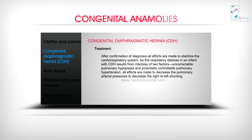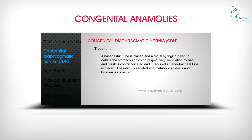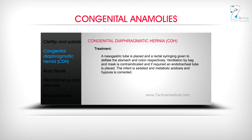Treatment: After confirmation of diagnosis, all efforts are made to stabilize the cardiorespiratory system. Respiratory distress in an infant with CDH results from the interplay of two factors: uncorrectable pulmonary hypoplasia and potentially controllable pulmonary hypertension. All efforts are made to decrease pulmonary arterial pressures to decrease right-to-left shunting. A nasogastric tube is placed and rectal syringing is given to deflate the stomach and colon respectively. Ventilation by bag and mask is contraindicated; if required, an endotracheal tube is placed. The infant is sedated and metabolic acidosis and hypoxia are corrected.